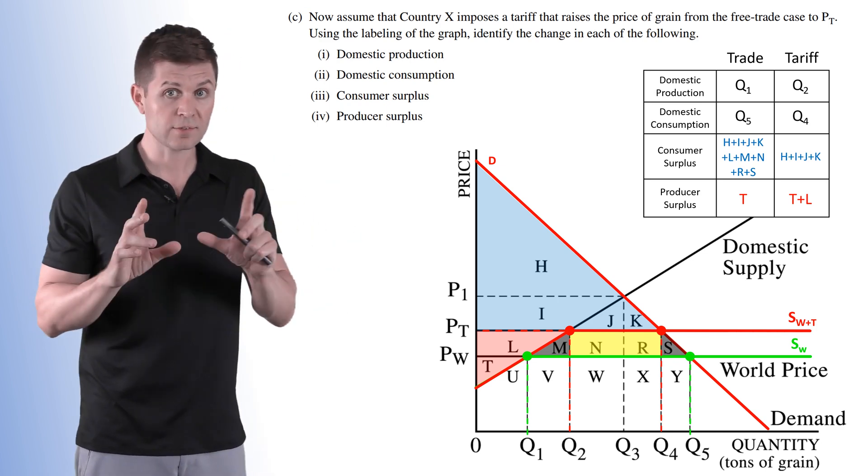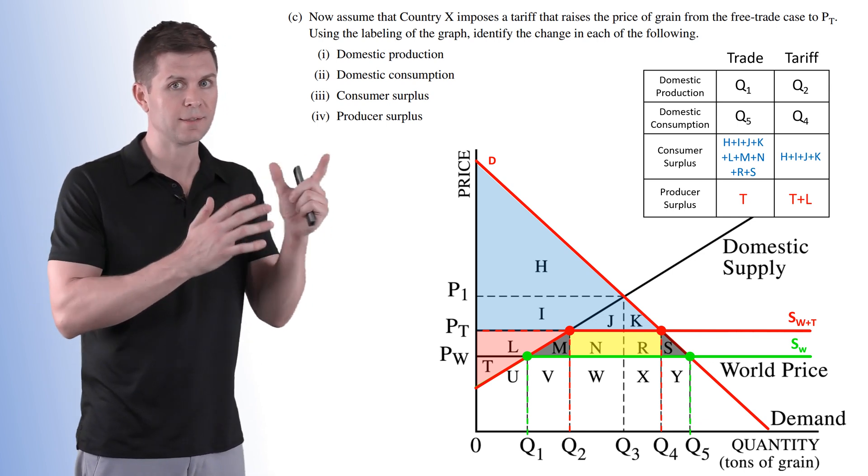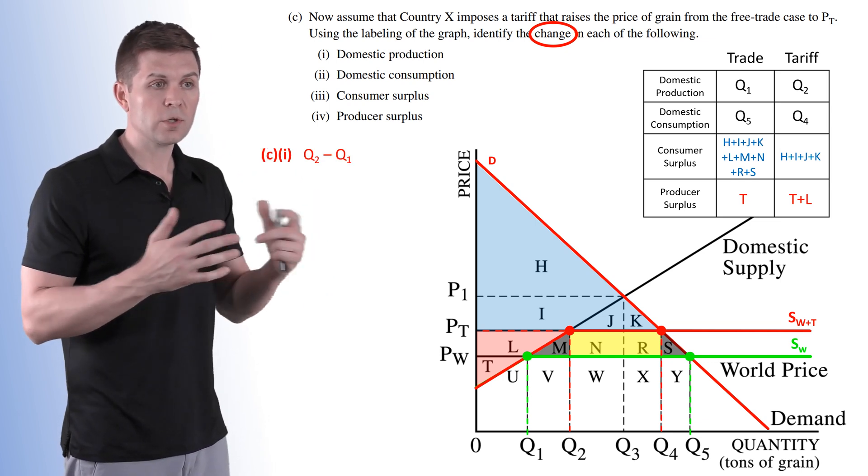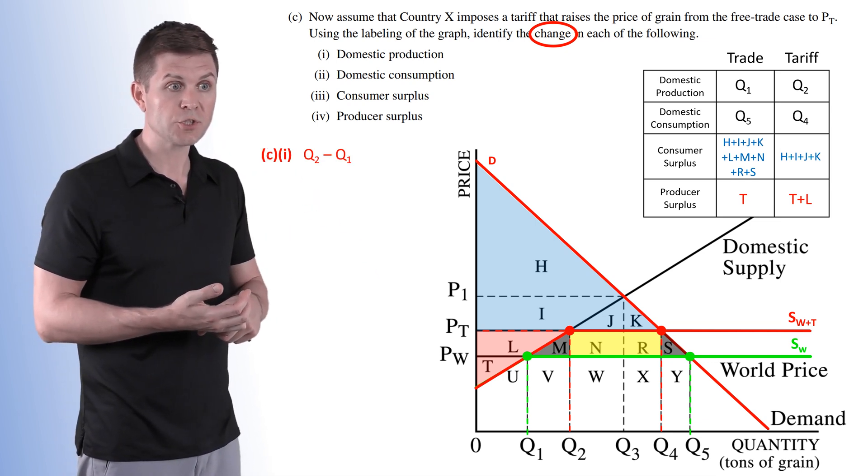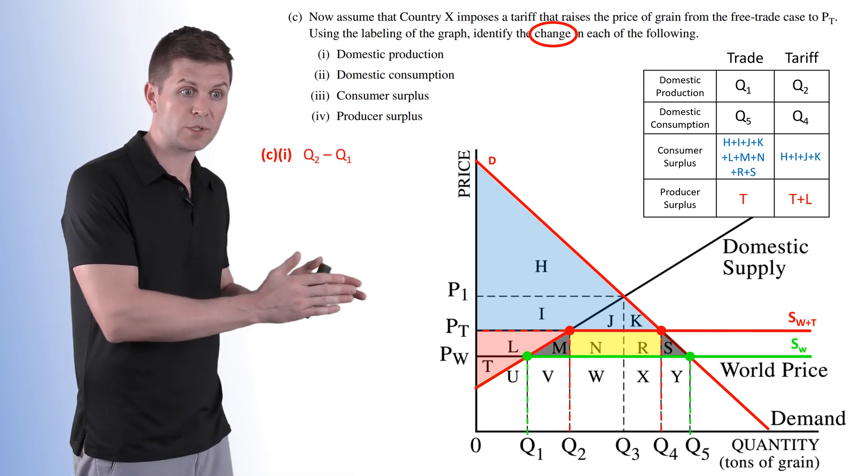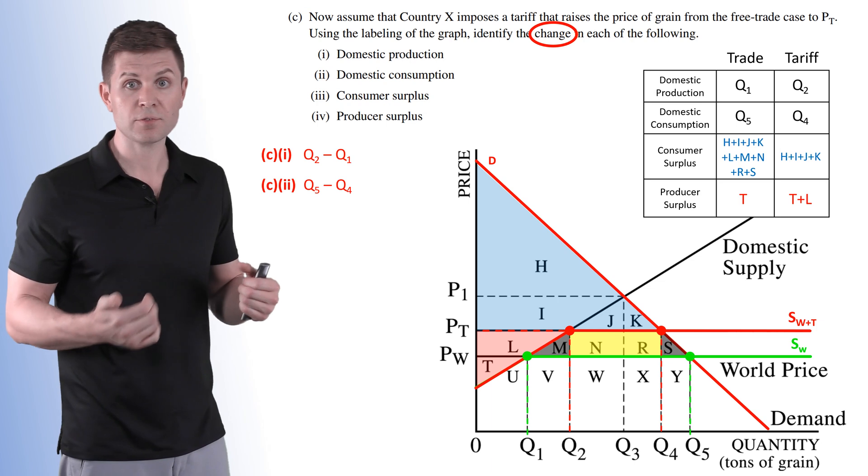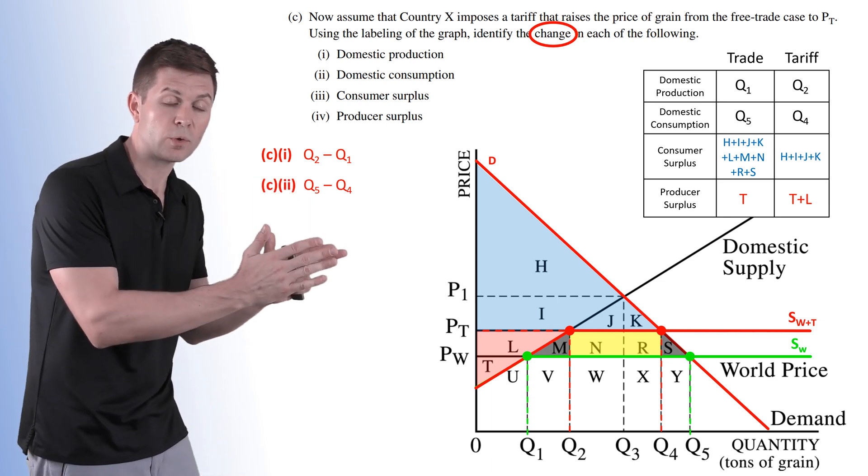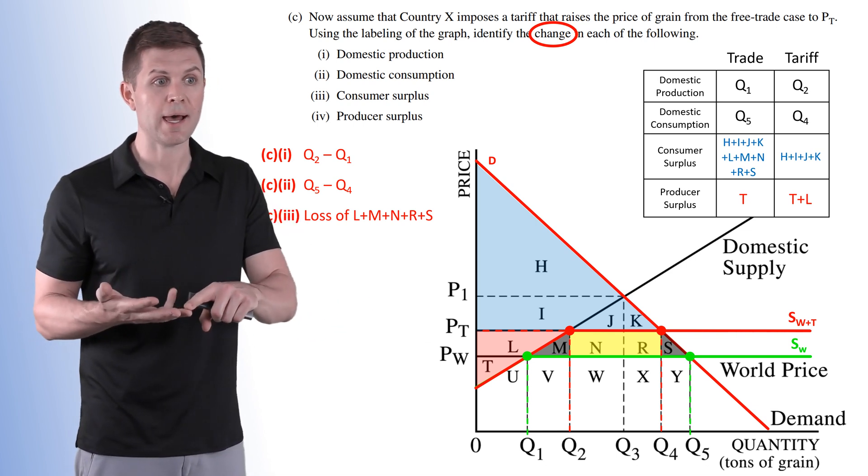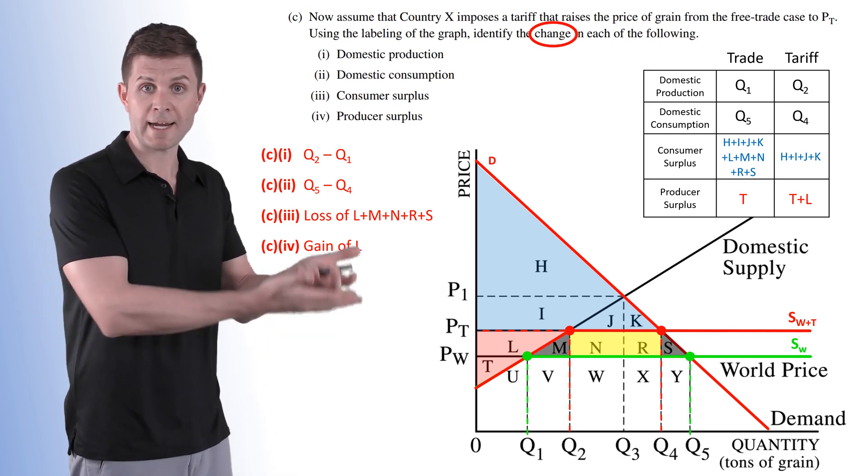Now the questions, and this is an important part of this, don't ask what the new values are. They ask what the change was. That's why I did this whole table just to help you understand it. So when we look at CI, domestic production, it's Q2 minus Q1. That's the amount that we added on. For domestic consumption, Q5 minus Q4. The distance between the two is what it decreased by. Now consumer surplus, we had a loss of L, M, N, R, and S. And then producer surplus, we had that gain of L.